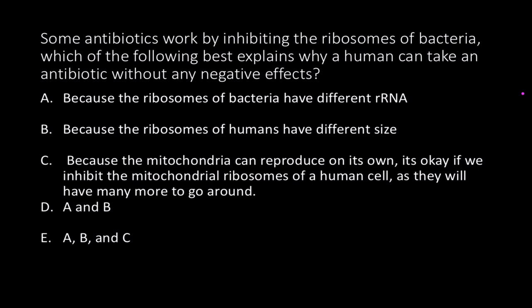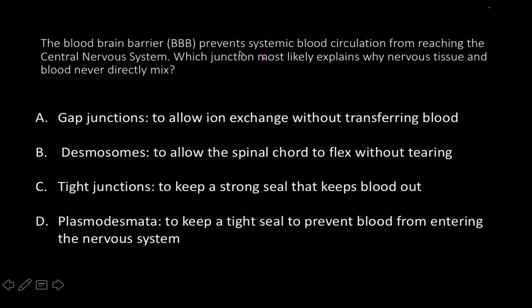Next question: some antibiotics work by inhibiting the ribosomes of bacteria — which of the following best explains why a human can take an antibiotic without negative effects? The answer is D, both A and E: the ribosomes of bacteria have different ribosomal RNA than human ribosomes do, and human ribosomes also have a different size and structure from bacterial ribosomes.